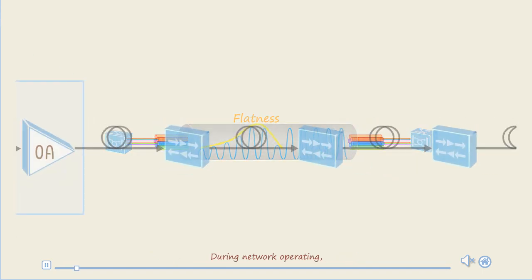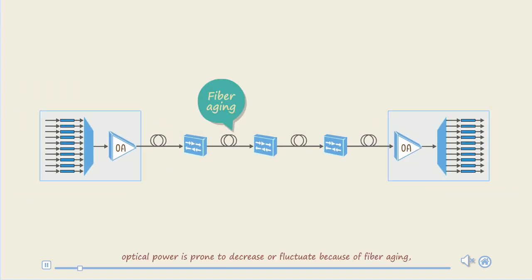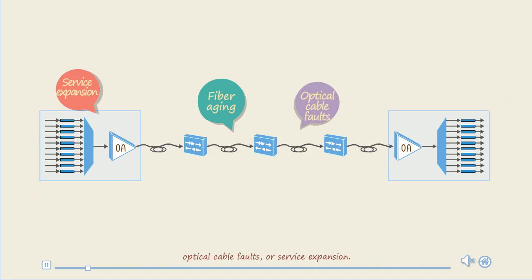During network operating, optical power is prone to decrease or fluctuate because of fiber aging, optical cable faults, or service expansion. This will deteriorate the quality of signals transmitted.